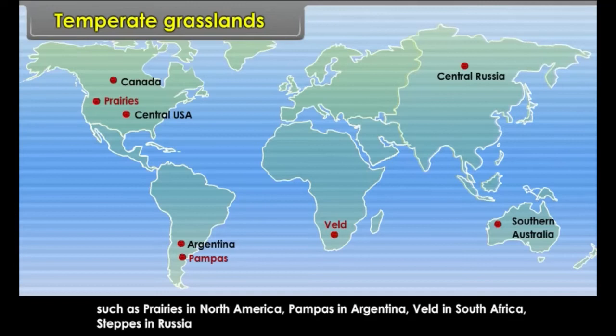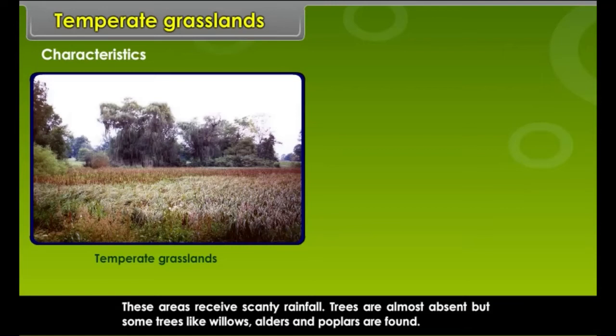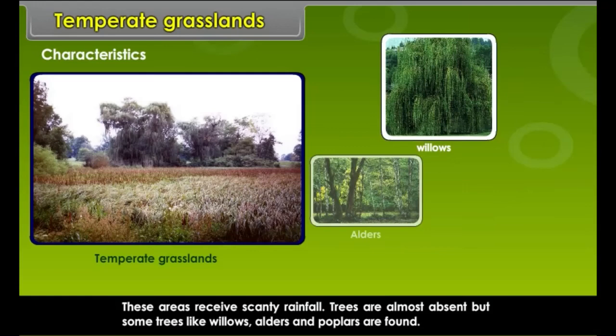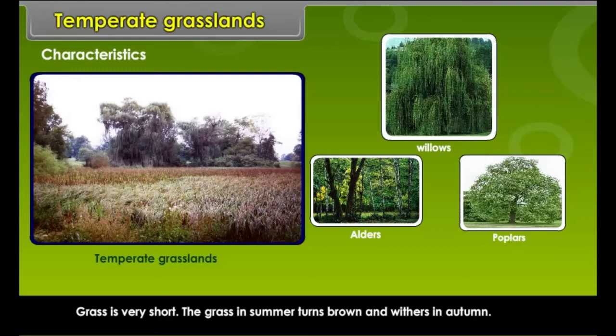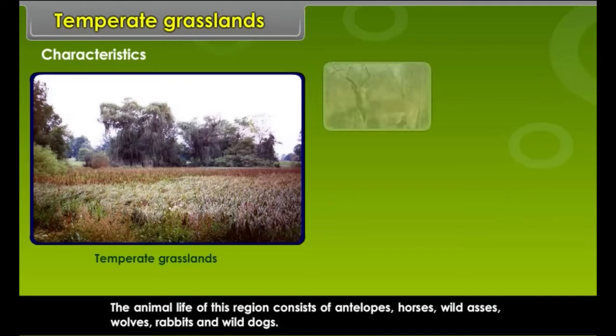Characteristics: These areas receive scanty rainfall. Trees are almost absent, but some trees like willows, alders and poplars are found. Grass is very short and turns brown in summer, withering in autumn. Cattle is reared in these grasslands. The animal life consists of antelopes, horses, wild asses, wolves, rabbits and wild dogs.